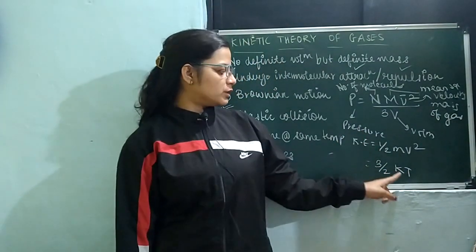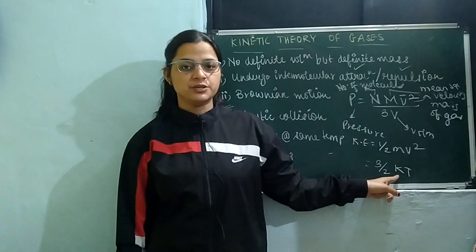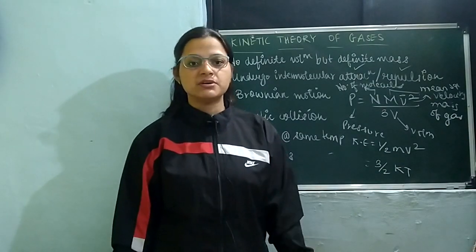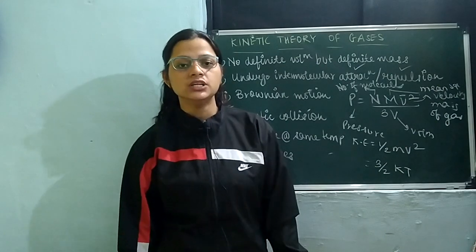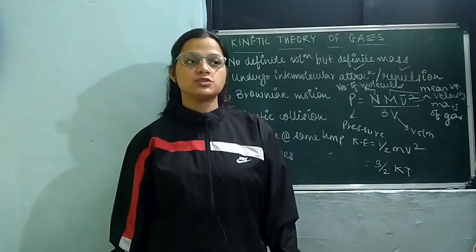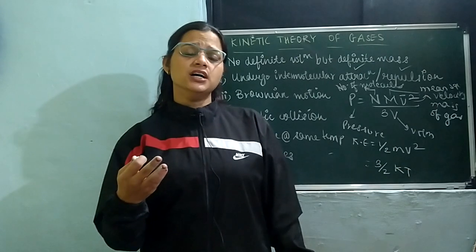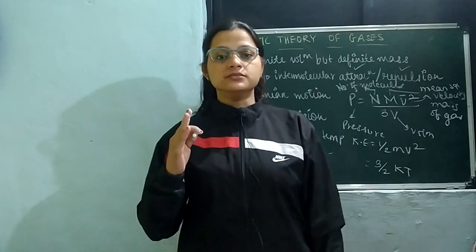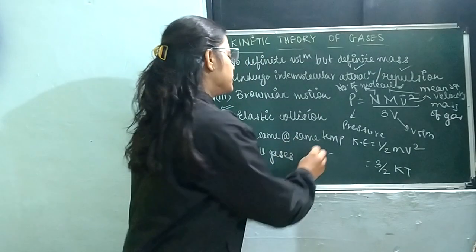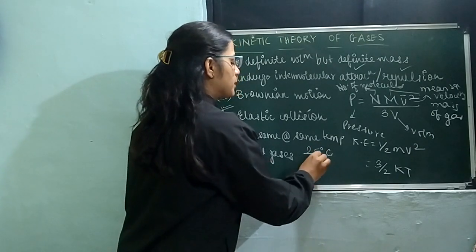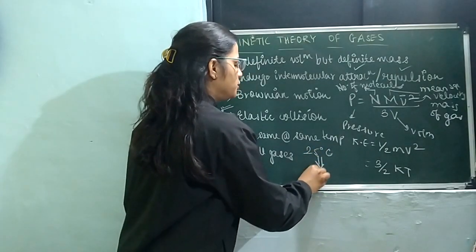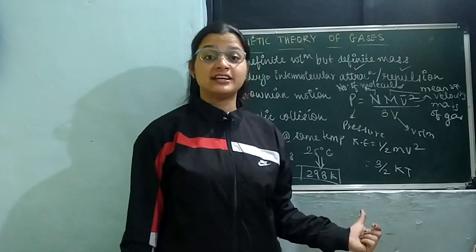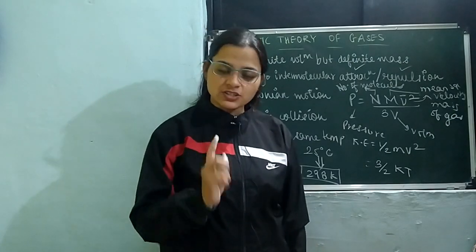If you have the Boltzmann constant and kinetic energy is given to you, and if you don't know the temperature in many cases, they give you the Boltzmann constant in brackets and tell you to calculate the kinetic energy of that particular gas. In chemistry, the standard STP means standard temperature, which is 25 degrees Celsius, or 298 Kelvin. Many questions in question papers are given at 298 Kelvin, so students should pay attention to that.